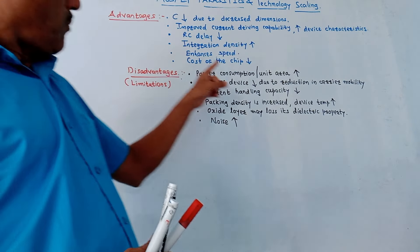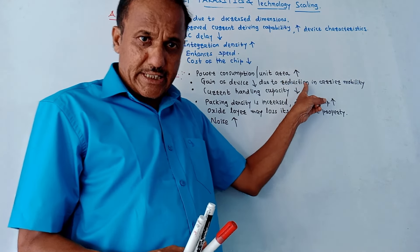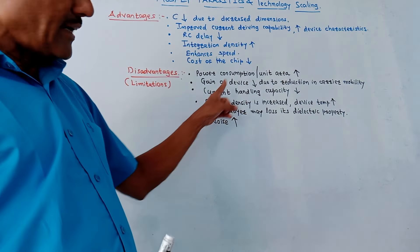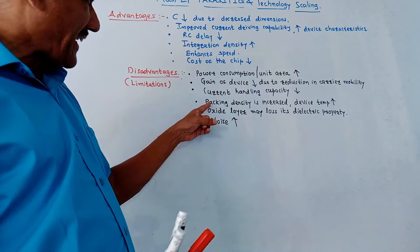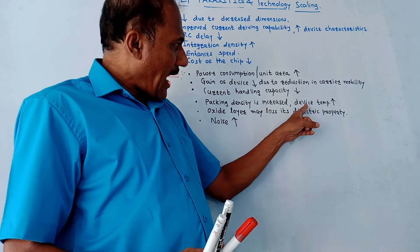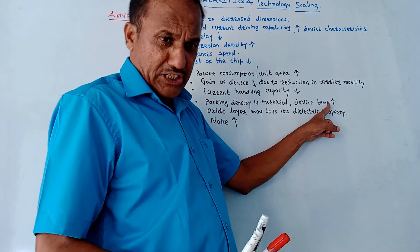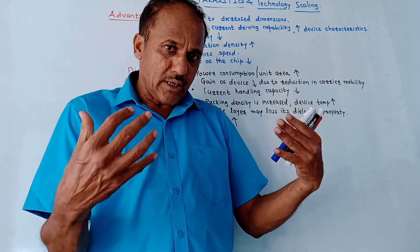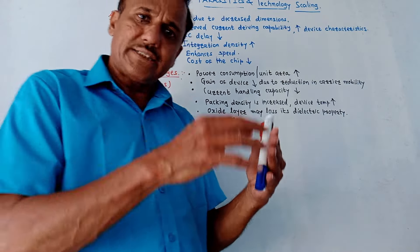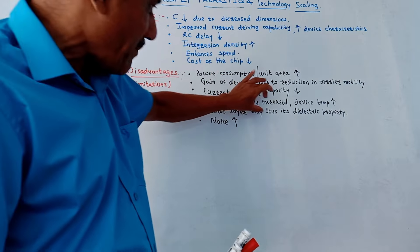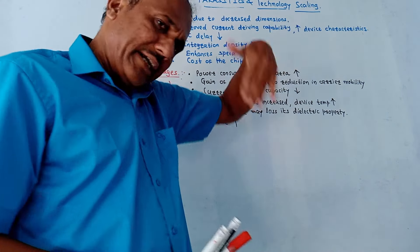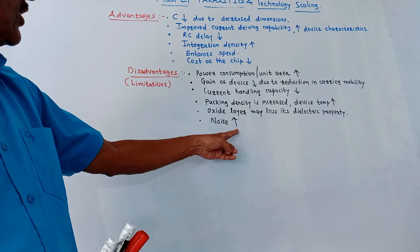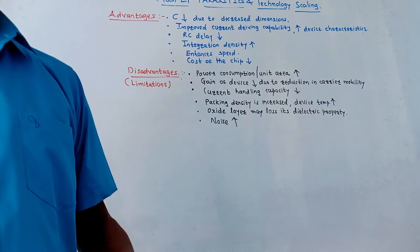Disadvantages or limitations: power consumption per unit area increases; gain of the device decreases due to reduction in carrier mobility; current handling capacity reduces; packaging density increases and device temperature increases. Whenever device temperature increases, the IC gets hot and it may be required to apply cooling methods. Additionally, the oxide layer may lose its dielectric property, requiring replacement, and there is an increase in noise.